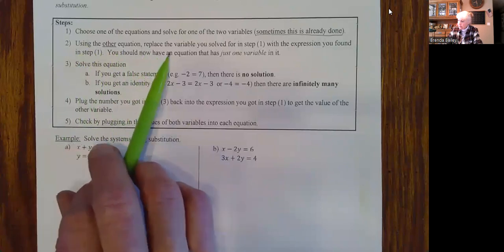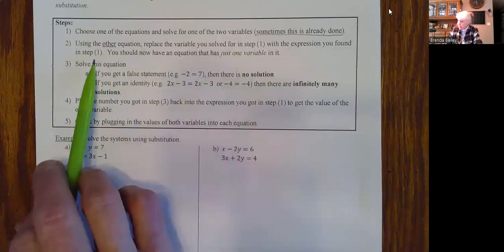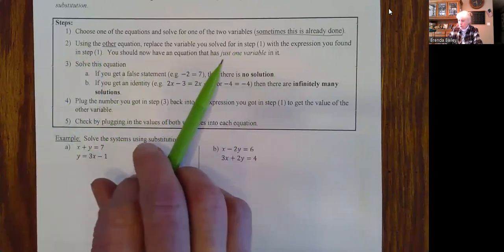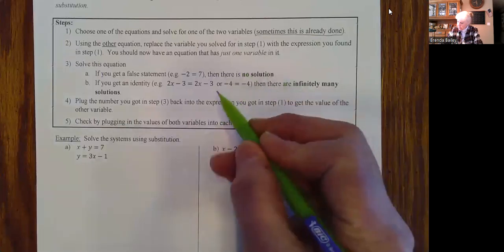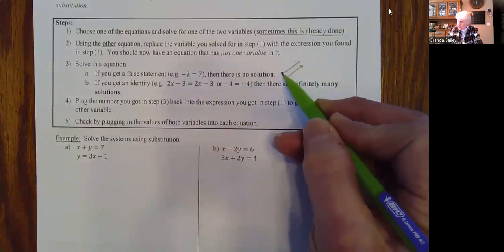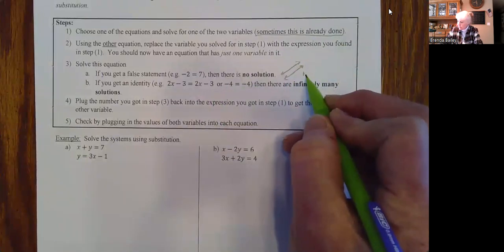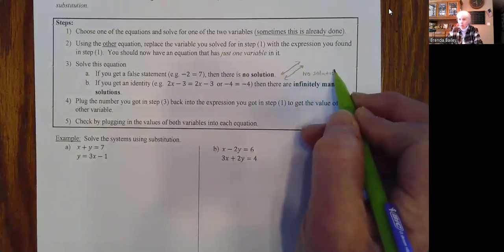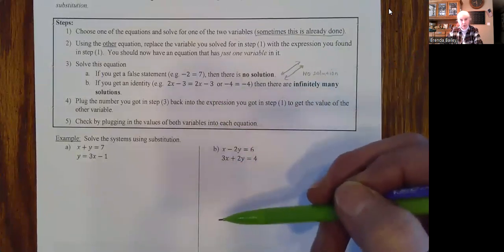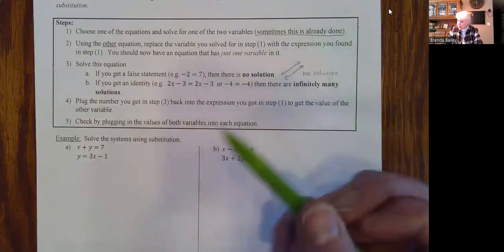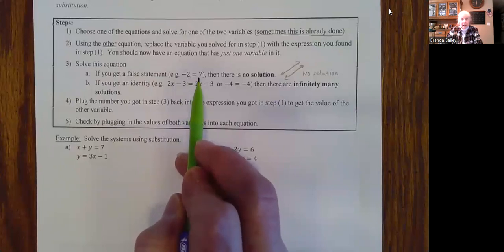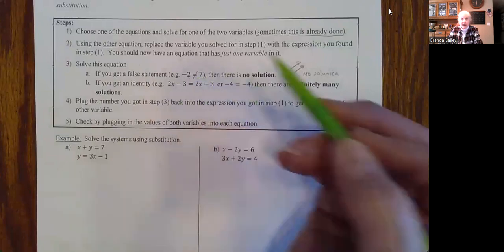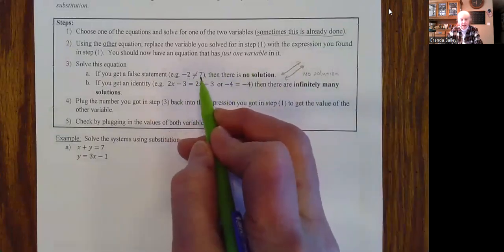Step two: using the other equation, replace the variable you solved for in step one with the expression you found. You should now have an equation with just one variable. Before, when we were graphing, we knew that parallel lines had a common slope and that meant no solution. But how are you going to know using these algebraic methods? You come down to where the x's or y's all drop out and you have a false statement — like negative two does not equal seven.